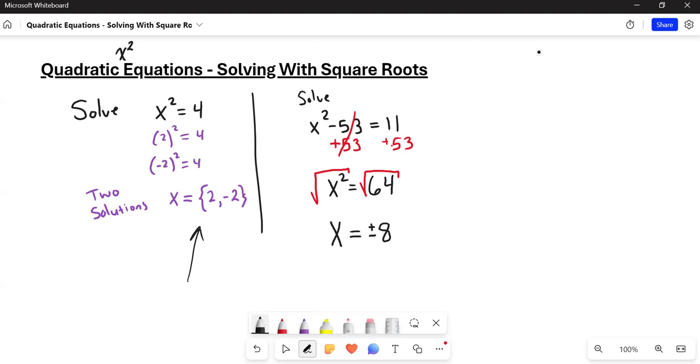So we're going to put plus minus any time we take that square root. And you can write your solution like that, or if you'd like to write it as a solution set, you can put in curly brackets, 8, negative 8, both solutions.